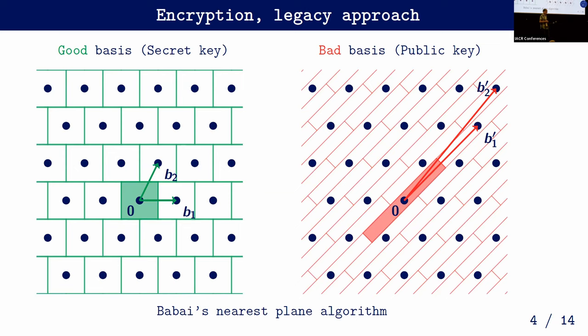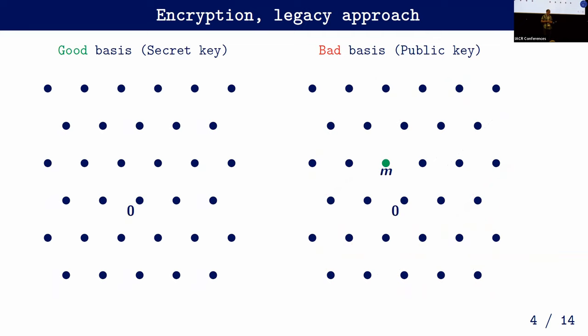What can we do with a good basis? We have Babai's nearest plane algorithm, a decoding algorithm that solves the Bounded Distance Decoding problem depending on the gap. The basis gives some fundamental area, and any target that lies in one of these boxes gets decoded to the center. The fundamental areas differ very much depending on whether you have a good or bad basis. To do encryption: take a message encoded as a lattice point, add a small error to create a target, and send it over the wire.